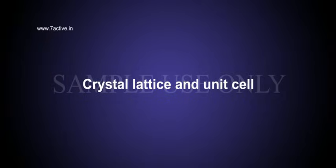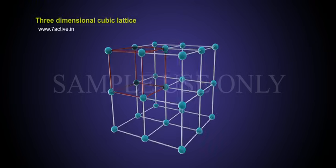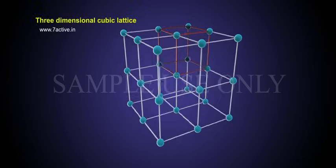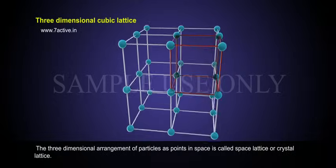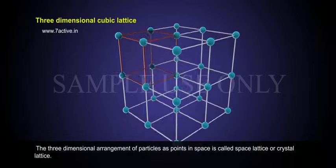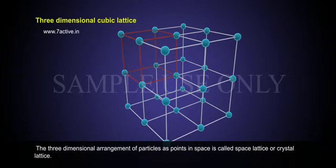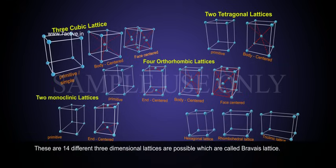Crystal lattice and unit cell: three-dimensional cubic lattice. The three-dimensional arrangement of particles as points in space is called space lattice or crystal lattice.